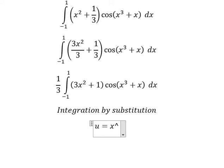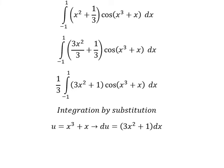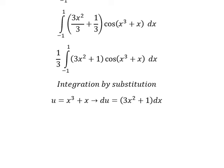Next we take the first derivative on both sides, and we have du = (3x² + 1)dx. Next we need to change the bounds.